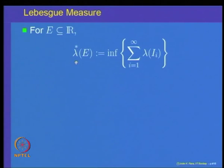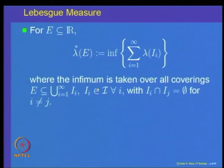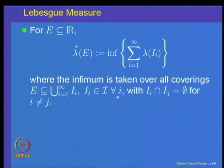The Lebesgue outer measure of a subset E is defined as follows: look at all possible coverings of the set E by elements in the algebra — that is, finite disjoint unions of intervals. We write lambda star of E as the infimum of the sum of lambda of intervals I_i, where the intervals I_i form a covering of the set E and are pairwise disjoint. That is the Lebesgue outer measure for a set E.